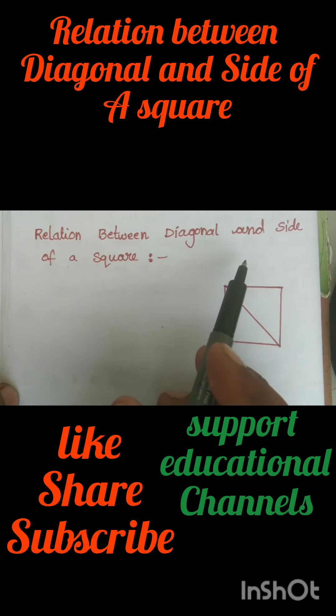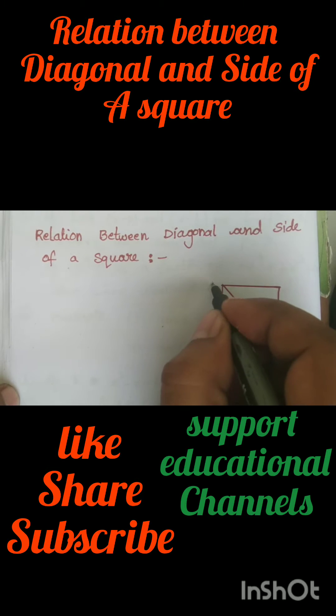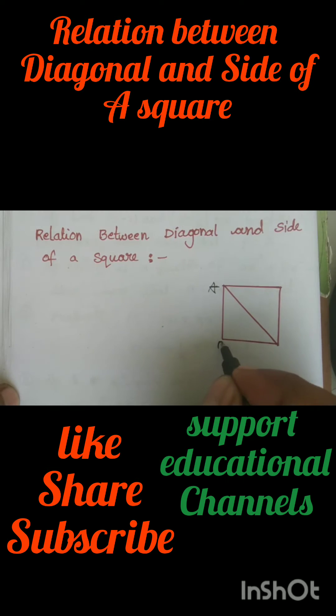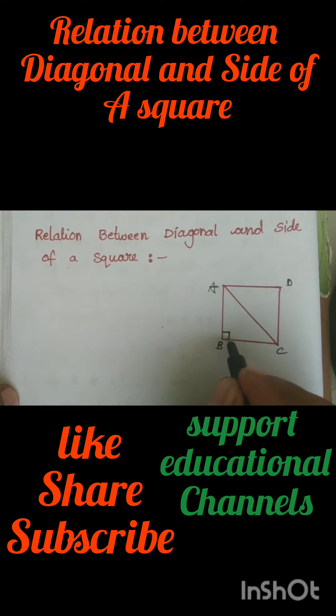Relation between diagonal and side of a square. Let ABCD be a square. As we know, in a square each and every angle is 90 degrees.